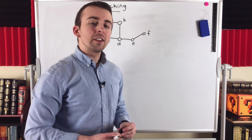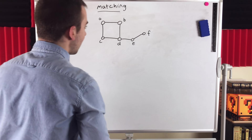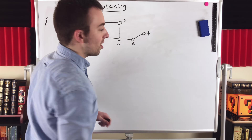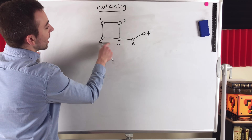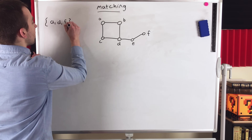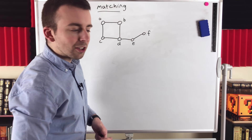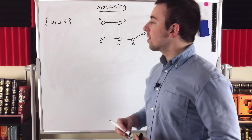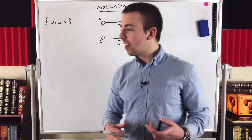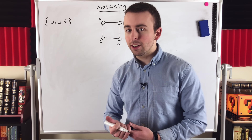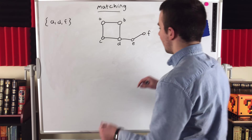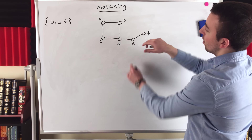A lot of you are probably already familiar with independent vertex sets. An independent vertex set is just a set of vertices, no two of which are adjacent. For example, an independent vertex set in this graph is the set containing A, D, and F — no two of these vertices are adjacent to each other. A matching is the same type of thing, which is why it's also called an independent edge set. An independent edge set, or matching, is a set of edges where no two edges in the set are adjacent, meaning they share a common end vertex.